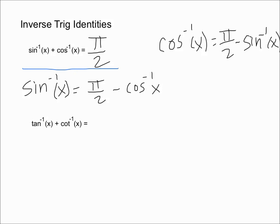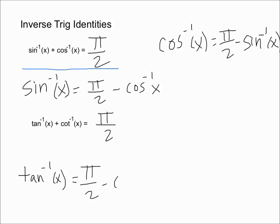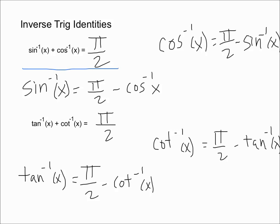The second identity states that the inverse tangent of x plus the inverse cotangent of x is equal to pi over 2 — the same result as the one above. The inverse tangent of x is going to be equal to pi over 2 minus the inverse cotangent of x, and the inverse cotangent of x is going to be equal to pi over 2 minus the inverse tangent of x. That is our second inverse trig identity.